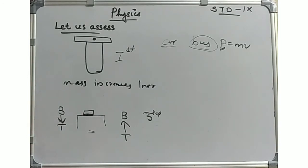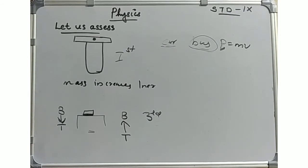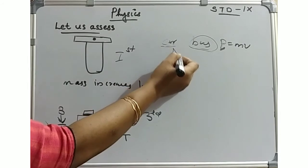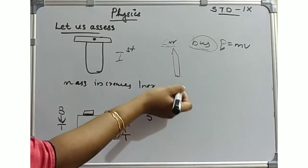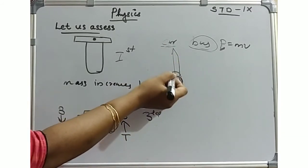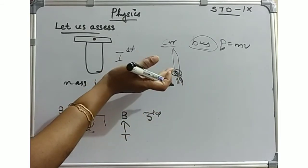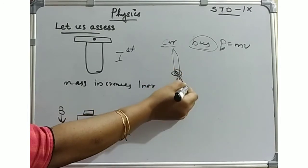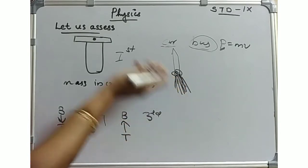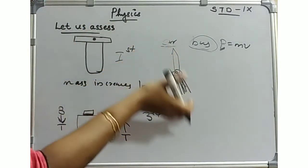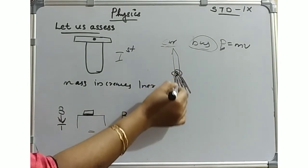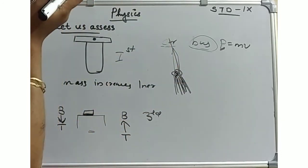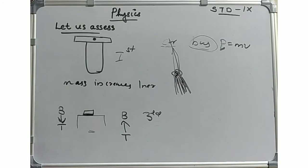On the basis of Newton's third law of motion, explain the force that helps to propel a rocket upwards. When the rocket fires, hot gases are expelled in the downward direction with very high force. As a reaction, the rocket moves upward. This is Newton's third law — action and reaction.